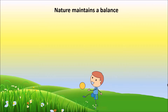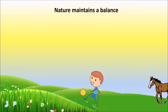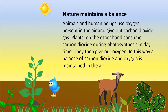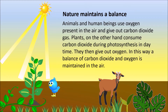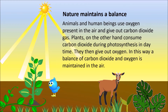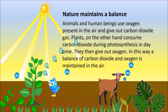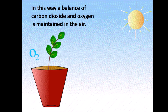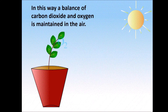How does nature maintain a balance? Animals and human beings use the oxygen present in the air and give out carbon dioxide gas. Plants, on the other hand, consume carbon dioxide during photosynthesis in daytime and then give out oxygen. In this way, a balance of carbon dioxide and oxygen is maintained in the air.